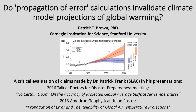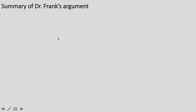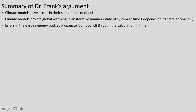My intent is not to attack Dr. Frank personally. To summarize Dr. Frank's primary argument: he argues that climate models have errors in their simulation of clouds, which is true, and that climate models project global warming in an iterative manner, meaning the state of the system at any time T depends on its state during previous time steps. Errors in the Earth's energy budget, which come from the cloud fields in particular, propagate or compound through the model's calculations through time.